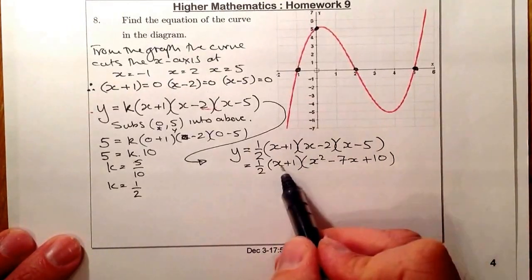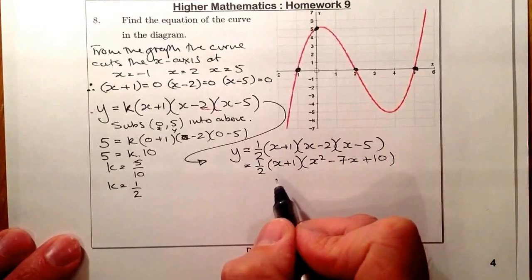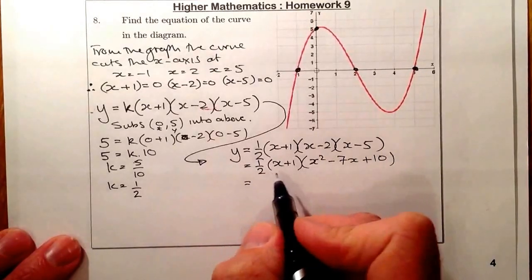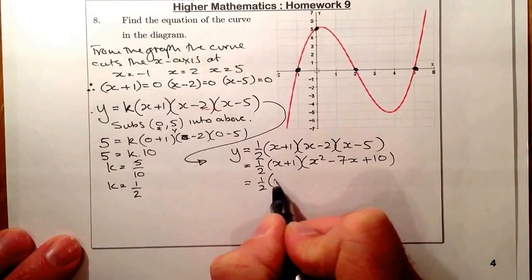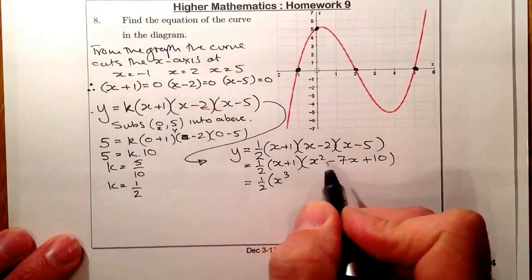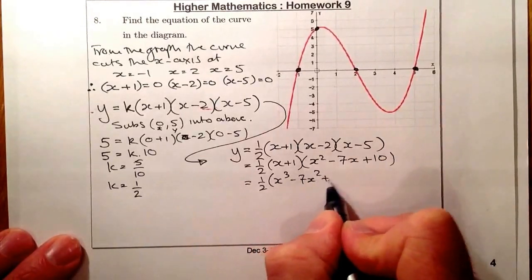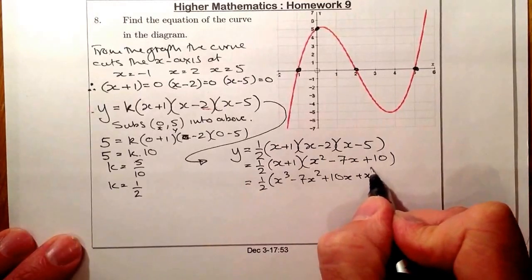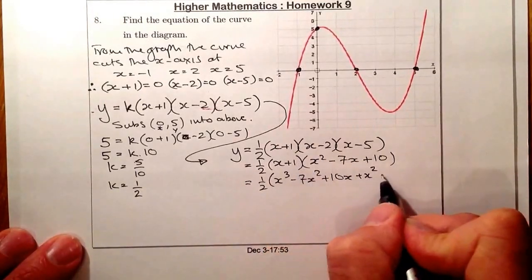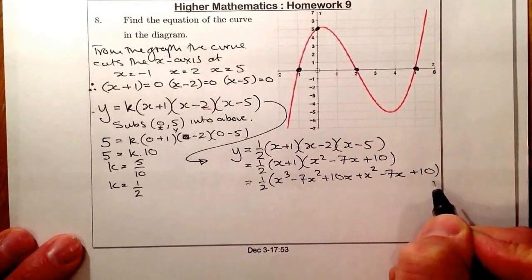What I'll then do is multiply this bracket out, the three-term bracket with the two, and multiply that out. And what I should get from there will be a half, and we'll go for x cubed, these two multiply together, minus 7x squared, plus 10x. I've then got plus x squared, just multiplying out by the one now, minus 7x, and I've got plus 10 at the end.